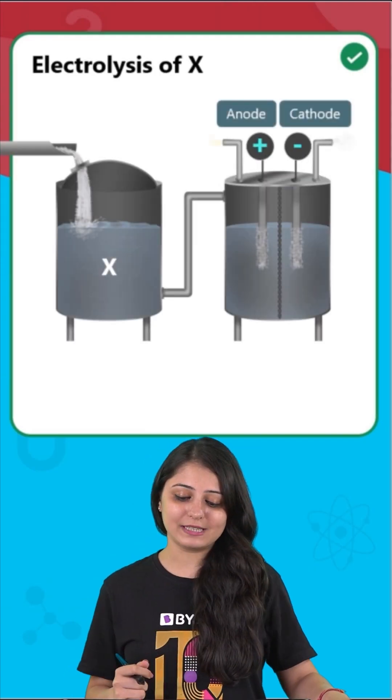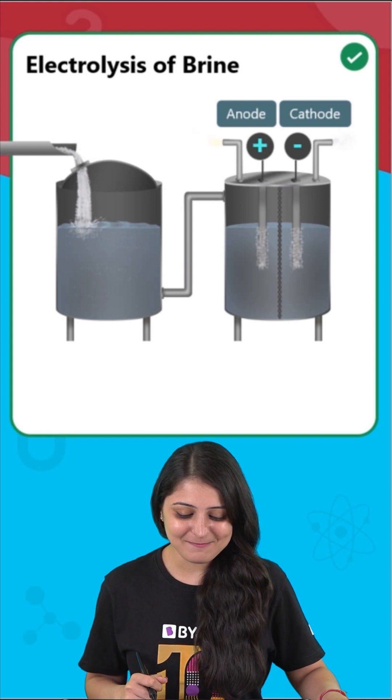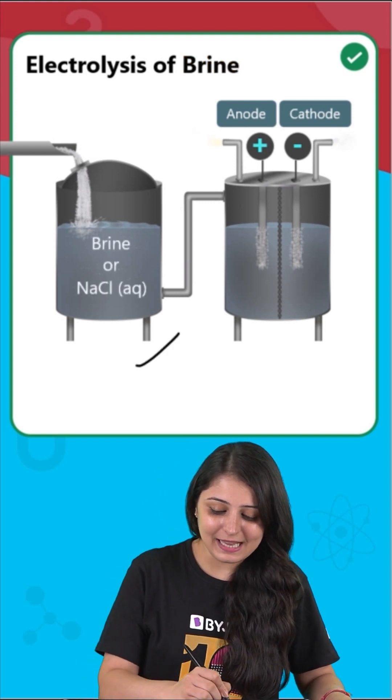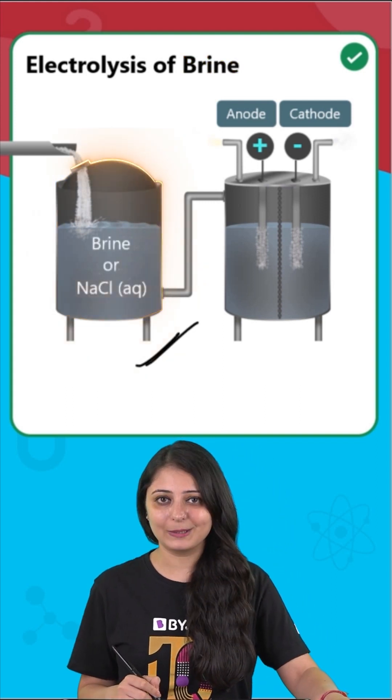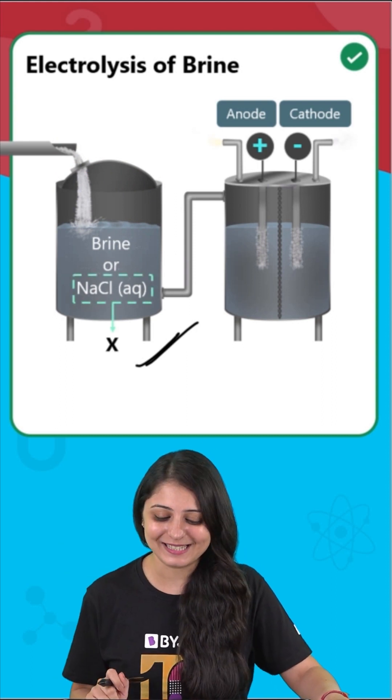let's first figure out what is X. Now X is nothing but brine, that means it is actually the concentrated solution of sodium chloride in water. So we know what X is now.